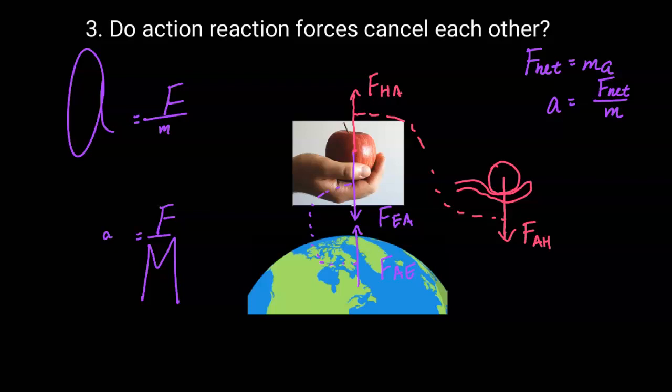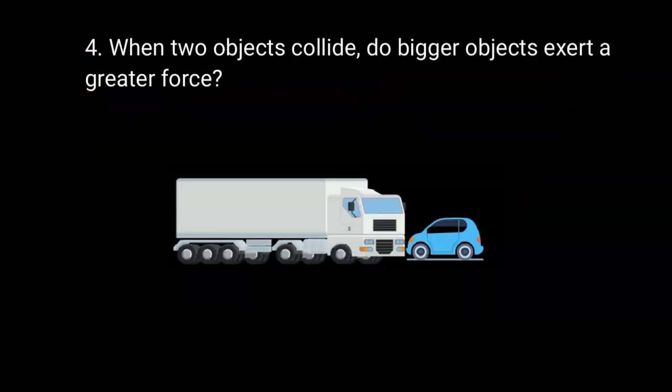Yes, the force of the earth pulling the apple equals the force of the apple pulling on the earth. However, the effect is different: because the apple has much smaller mass, the effect on the apple is much greater — large acceleration. The mass of the earth is huge, so the effect on the earth is a very small acceleration. When two objects collide, do bigger objects exert a greater force? The answer is no — the forces are equal.